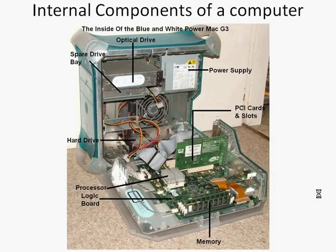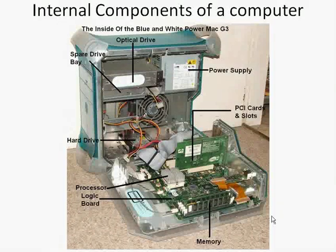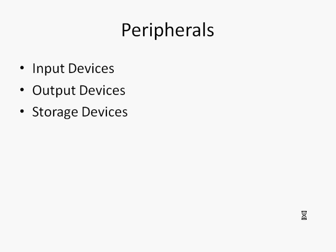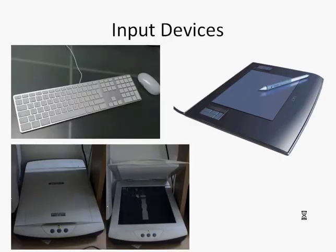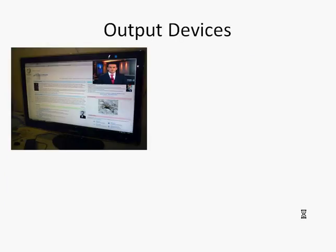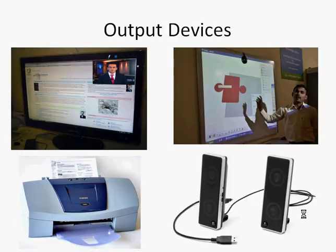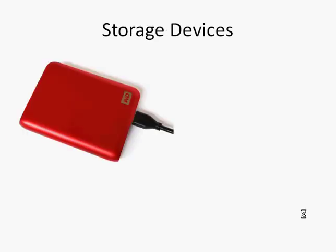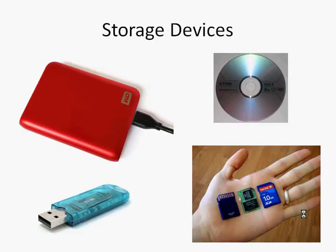The computer has lots of internal parts — we'll learn more about those, such as a hard drive or memory, in a future video. Peripherals can be divided into three categories: input, output, and storage devices. Input devices are things we use to put information into the computer. Output devices give us information out of the computer. And storage devices are where we keep and save our files.